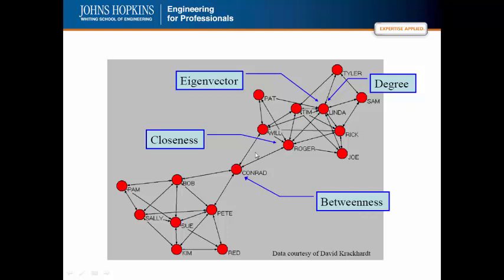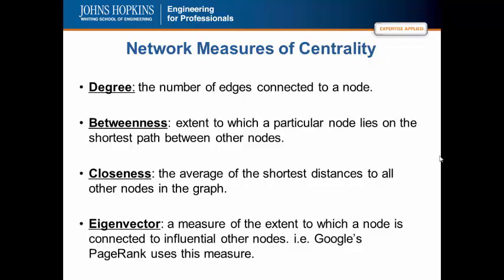Conrad is high in betweenness centrality because he is on the shortest path between more nodes than any other. Eigenvector centrality is a measure of how well connected you are to highly connected others. Again, degree is the number of edges connected to a node. Betweenness is the extent to which it lies on the shortest path between others. This is going to be the focus of this lecture. Closeness is the average of the shortest distances to all other nodes. And eigenvector is the extent to which it's connected to influential others.